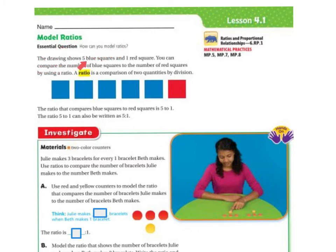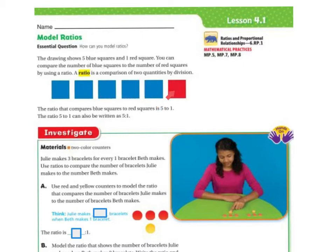The drawing shows 5 blue squares and 1 red square. You can compare the number of blue squares to the number of red squares by using a ratio. A ratio is a comparison of 2 quantities by division. The ratio that compares blue squares to red squares is 5 to 1, because there are 5 blue squares for every 1 red square. This ratio can also be written as 5:1.